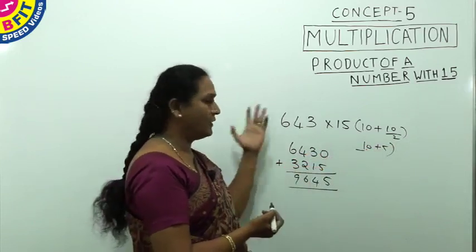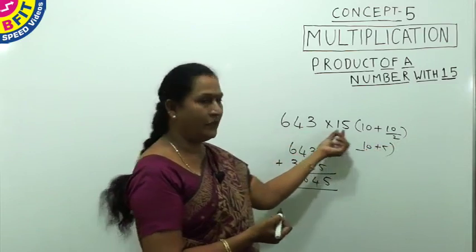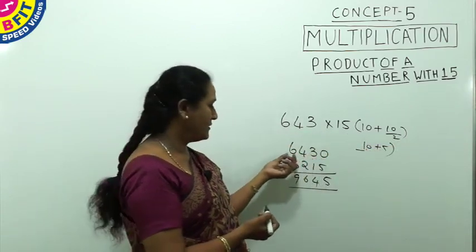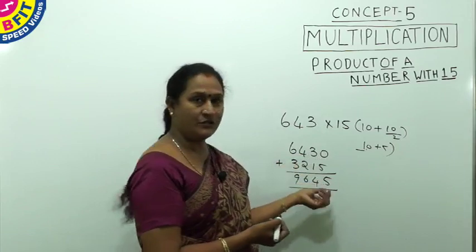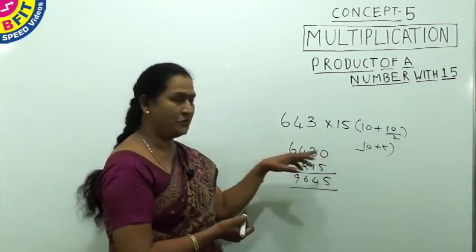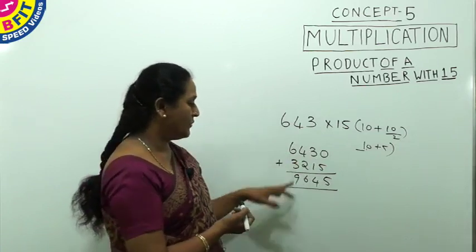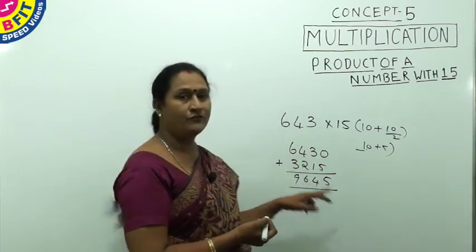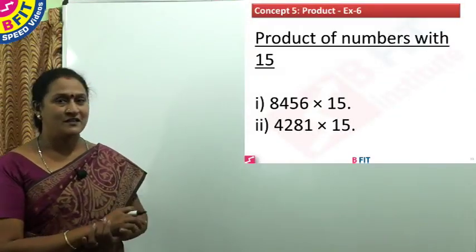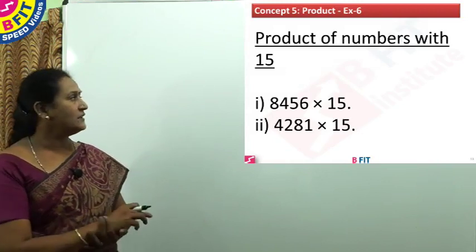So for 643 × 15: put one 0 with the given number to get 6430, add half of 6430 which is 3215, and the product is 9645. Now let's see a few examples: find the product of 8456 with 15, and the product of 4281 with 15.